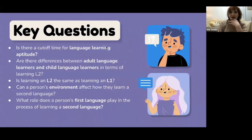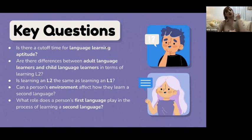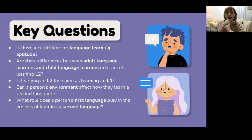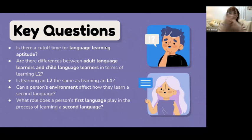Some key questions that people who study second language acquisition or linguistics ask themselves: Is there a cutoff time for language learning aptitude? Language learning aptitude is your ability to learn a language. They're asking whether there's a certain age at which we begin to struggle with learning a foreign language. I would argue not, because one of my oldest students is 95 years old — we still have the ability to learn language even when we're older.